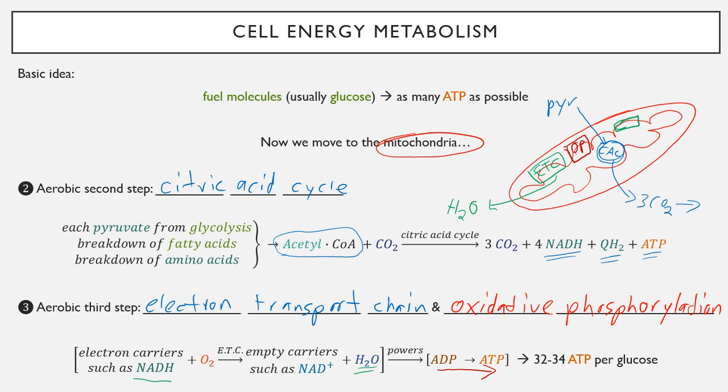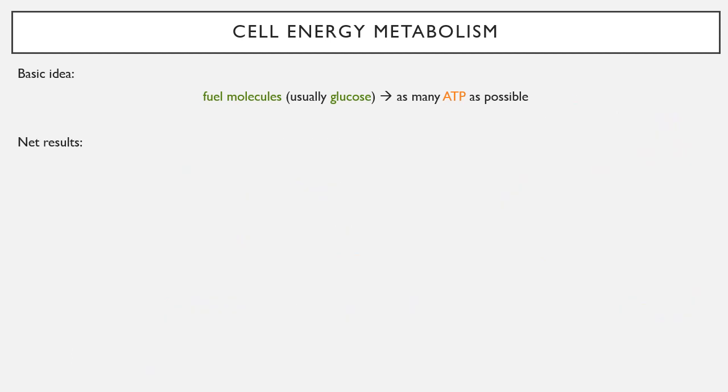It's turning adenosine diphosphate, the low energy form, into adenosine triphosphate, the high energy form. And this produces 32 to 34 ATP per glucose. So that is a huge improvement. We had two in glycolysis, two in the citric acid cycle, we get 32 to 34 here.